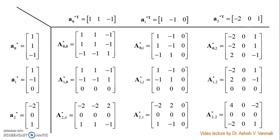Now we multiply them point by point. We will have nine different orthogonal basis images: A_00, A_01, A_02 conjugate and so on, with the last being A_22 conjugate. It is again simple point-by-point multiplication to construct these matrices.